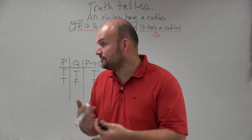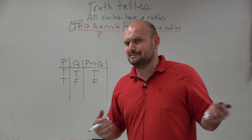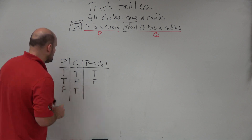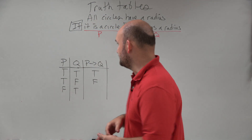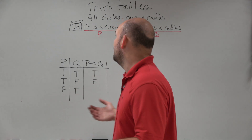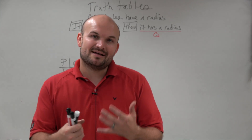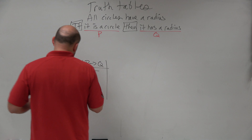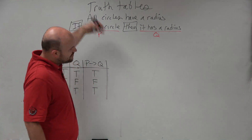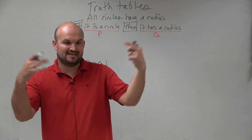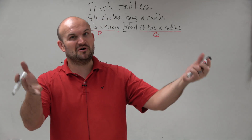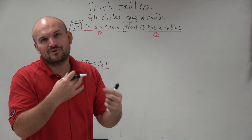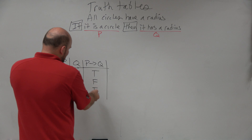It gets really confusing when the hypothesis is false but the conclusion is true. For example, if we say we don't have a circle, but it does have a radius — since the hypothesis is false and the conclusion is true, your statement is still actually true, because you never really said it was a circle without a radius. Even if your hypothesis was wrong, you weren't technically lying. So your statement is still considered true.